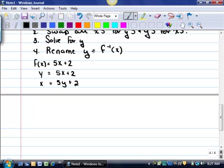And then in your next step, solve for y. So, first you're going to subtract 2 from both sides. And then as a last step, divide by 5. So, you've got the y by itself. And then rename y, f inverse of x.